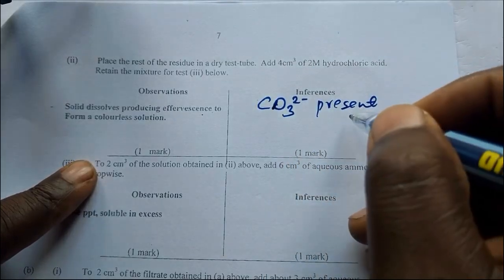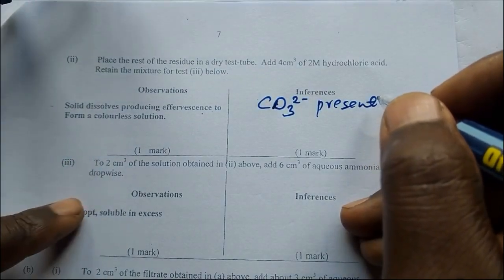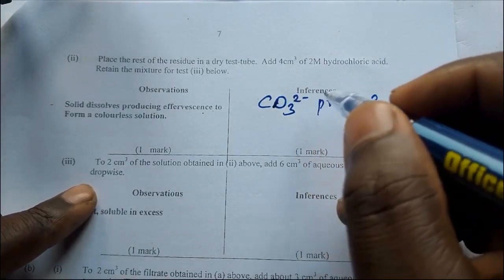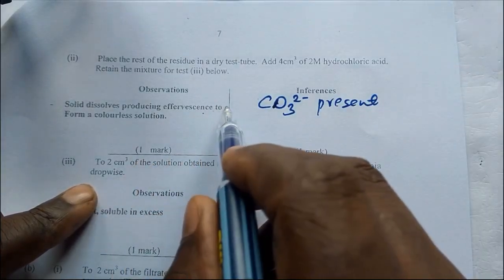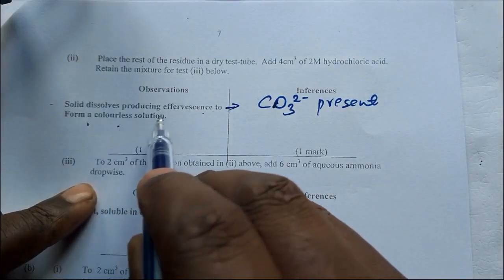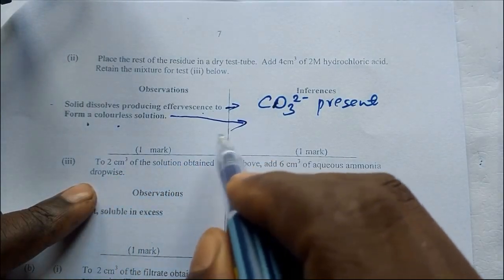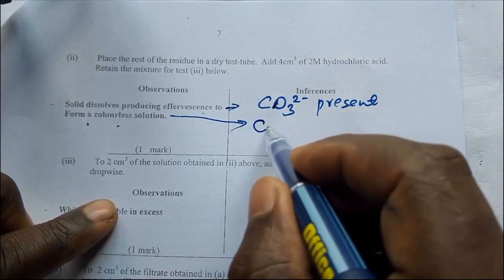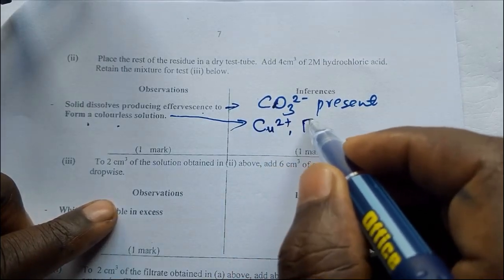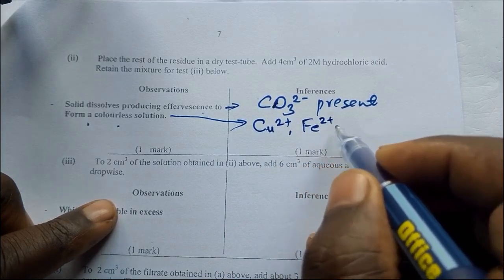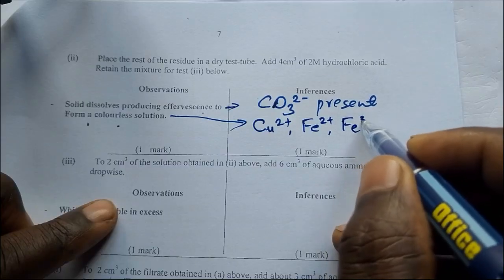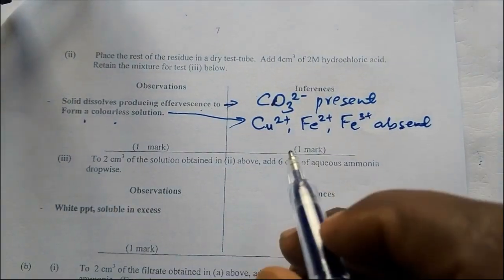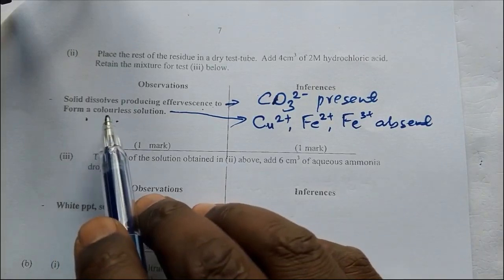If effervescence is produced then it confirms that CO₃²⁻ is present. Meaning that a carbonate or hydrogen carbonate could be present. So we are not going to introduce hydrogen carbonate here. It is the carbonate that is present. For the first observation, then form a colorless solution. If we want to write an inference for this then it means the colored ions are absent.